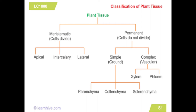Meristematic tissue has three subdivisions: apical, intercalary, and lateral. If you look at the stem or the root at the apex, that region is called apical meristematic tissue.